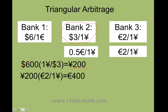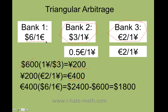Now I have my yen. I go to bank three and switch my yen for euros, because I want to make a profit. So 200 yen times two divided by one gives me 400 euros. Finally I have 400 euros, but I need to go back to the States and convert back to dollars. So 400 euros times six over one gives me $2,400, minus the $600 that was my original investment.